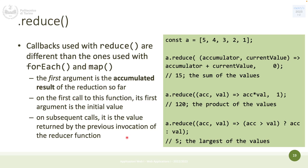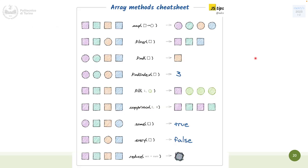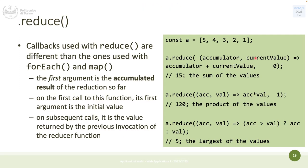Unlike other methods where the callback receives the element and optionally the index, in reduce the first argument of the callback is the accumulated result so far. Think of adding five elements: you sum the first two, store the temporary result, add the third element, then the fourth — that running partial result is the first parameter, called the accumulator. The second parameter is the current value of the iteration.